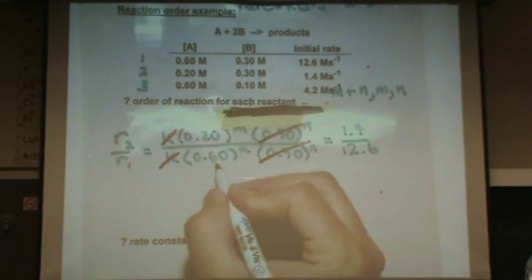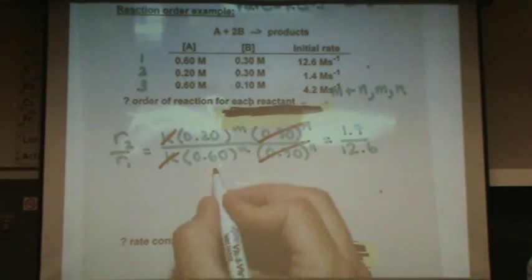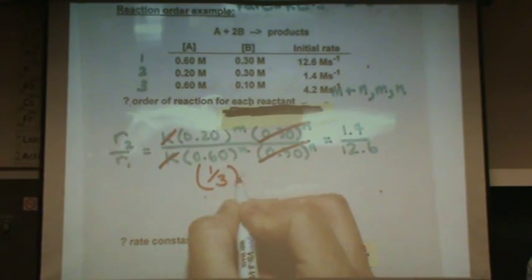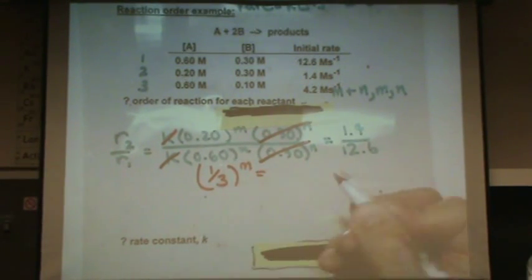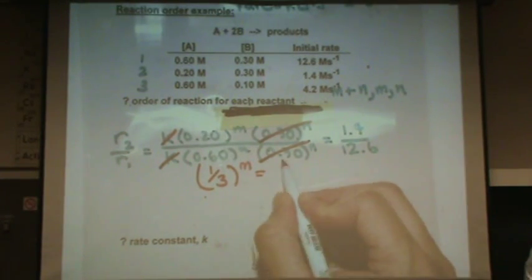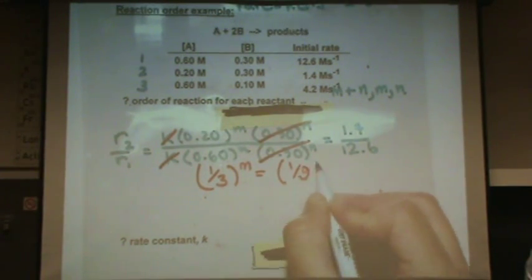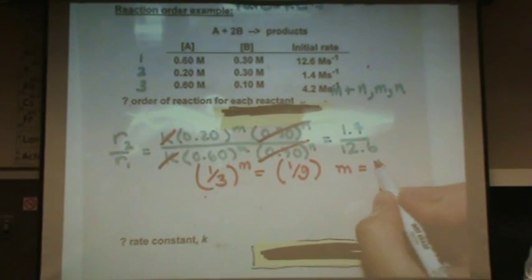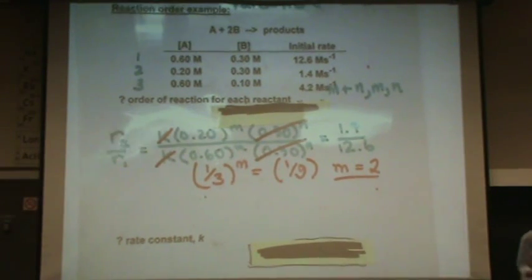In this case, 0.2 divided by 0.6, that's one third to the m power. And if you get your calculator out, 1.4 divided by 12.6, that's going to be one ninth. So what's m equal to? Two. So that's the order with respect to A.